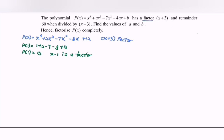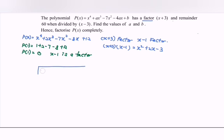So (x - 1) is a factor for P(x). Now we have two factors: the first one is (x + 3) and the second one is (x - 1). My suggestion is to expand the situation. So (x + 3) multiplied by (x - 1) gives us x² + 2x - 3. Now make use of long division.